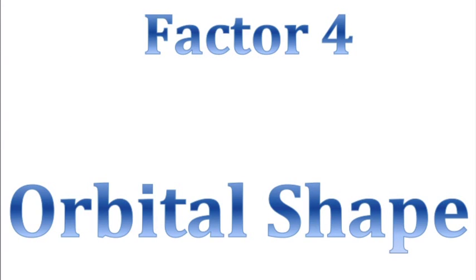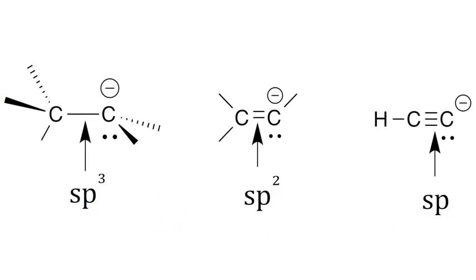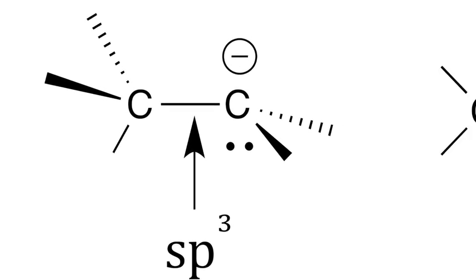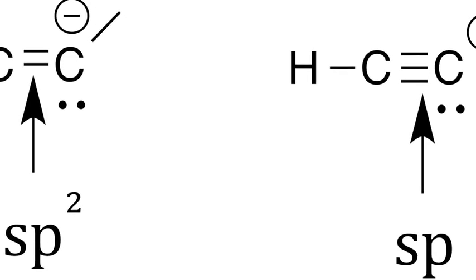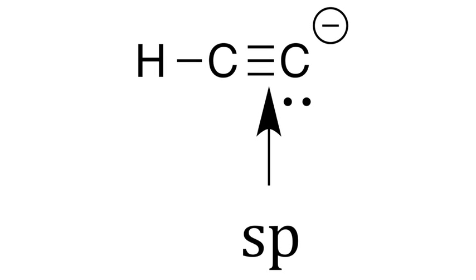Let's finish up with our last factor, orbital shape. Before we attempt the example, we must first understand what different orbitals, sp3, sp2, and sp, mean in terms of stabilization.